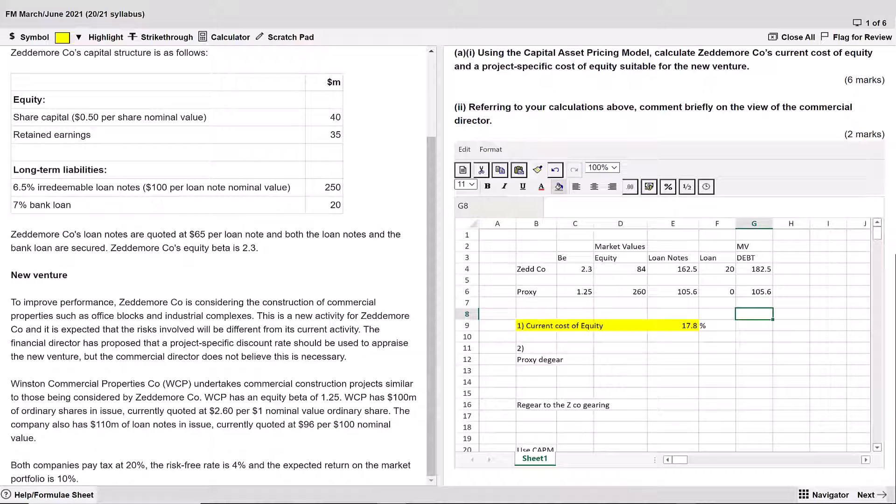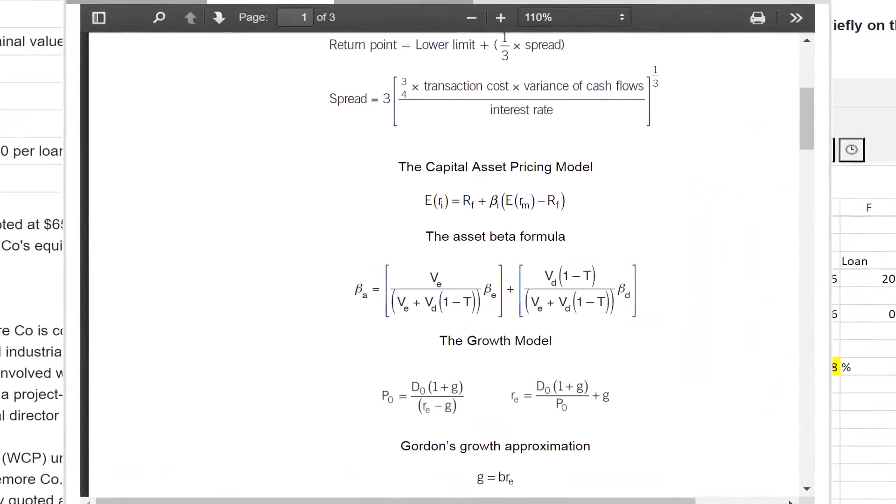We're now ready to do the de-gear. The key here is to first do the fraction as I call it first, and then times the fraction to get the beta A. You'll times the fraction by the proxy beta E to get the beta A. What do I mean by the fraction? Let's have a look at the formula sheet again. We cross out the debt portion of the asset beta formula and we're just using the equity portion. So it's the value of equity over the value of equity plus the value of debt times one minus T. That is the fraction I want. Then I'm going to times that fraction by the beta E to get the beta A.